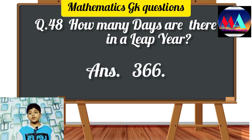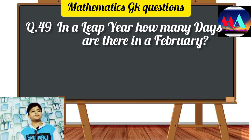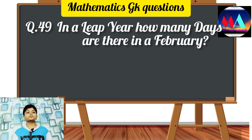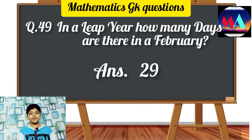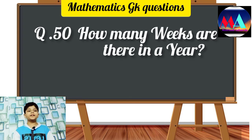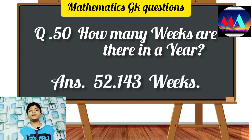Question number 49: In a leap year, how many days are there in February? Answer: 29. Question number 50: How many weeks are there in a year? Answer: 52.143 weeks.